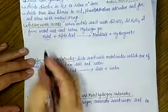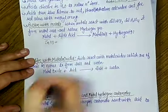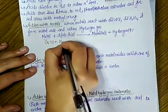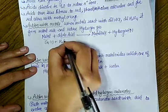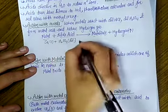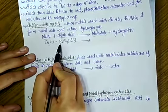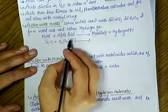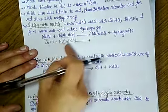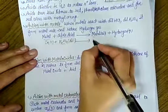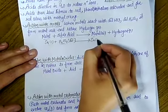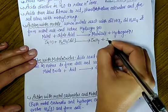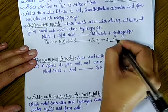For example, if you take zinc metal in solid state and react it with dilute H₂SO₄ — H₂SO₄ is a strong acid because it is completely dissociated — what will form? Zinc sulfate plus H₂ gas is released.